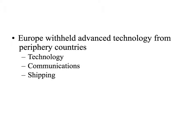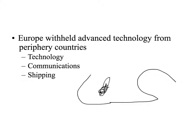Europe withheld technologies from periphery countries — that's how it kept its advantage. It had technology, communications, and shipping, while the rest of the world was not as advanced. The rest of the world didn't really interact with each other much until the later 1800s. In the 1600s, 1700s, and 1800s, Europe withheld technology and things like that.